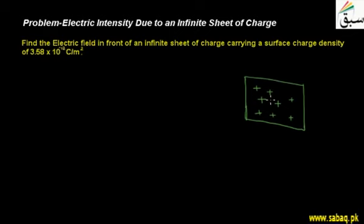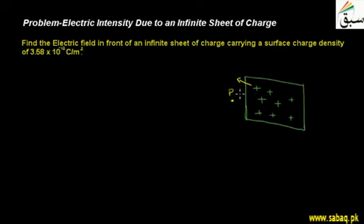We said that we have to find the electric field. For example, I am going to take a point in front of this sheet. Since the sheet has charge, we know that charges — because of the electrons — produce an electric field. Because of this charged sheet, the electric field E will come out.